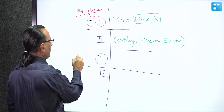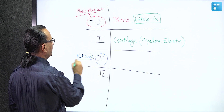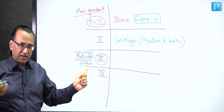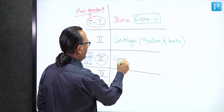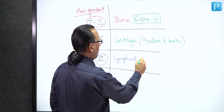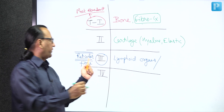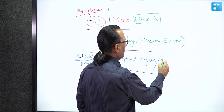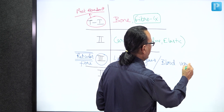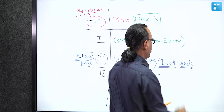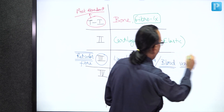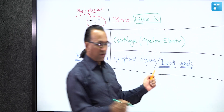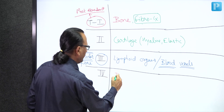Type 3 collagen forms reticular fibers and provides the framework for several organs like lymphoid tissue - the liver, spleen, and lymph nodes. Reticular type 3 collagen fibers are also found in blood vessels such as the aorta, specifically in layers like the tunica media and tunica adventitia. Type 4 collagen is found in basement membranes, supporting epithelial tissue and functioning in filtration, such as in the glomerular membrane of the kidneys.